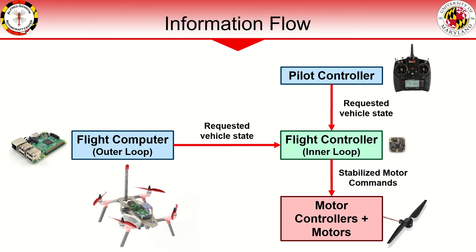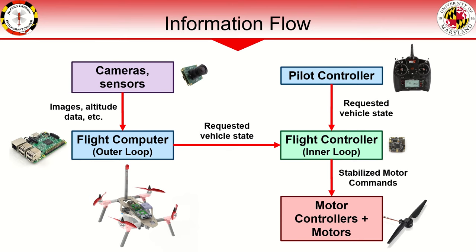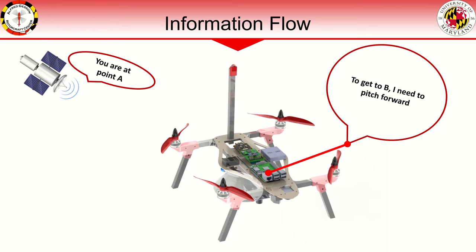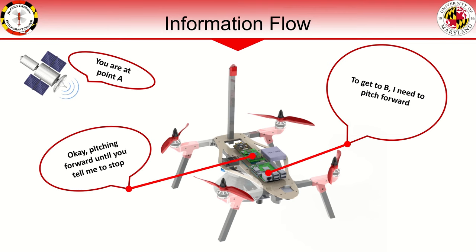The flight computer is the decision-making brain of a drone that makes requests as it is informed by various onboard sensor data combined with what specific task it should be carrying out. For example, GPS data tells the flight computer where it is in space. If the mission is to travel from point A to B, then the flight computer must generate the required commands to the flight controller to navigate the drone accordingly.